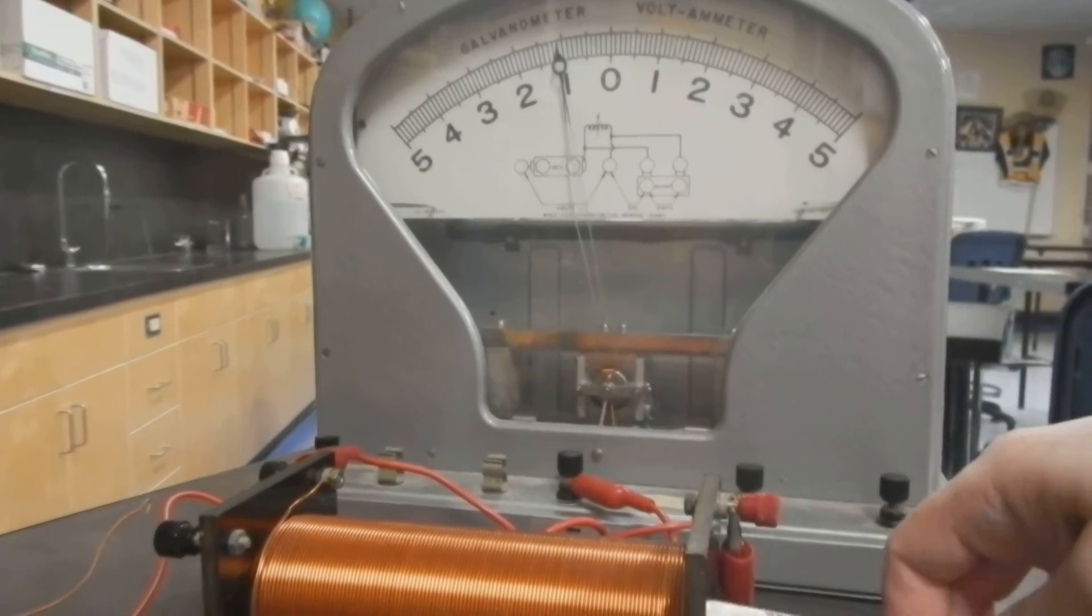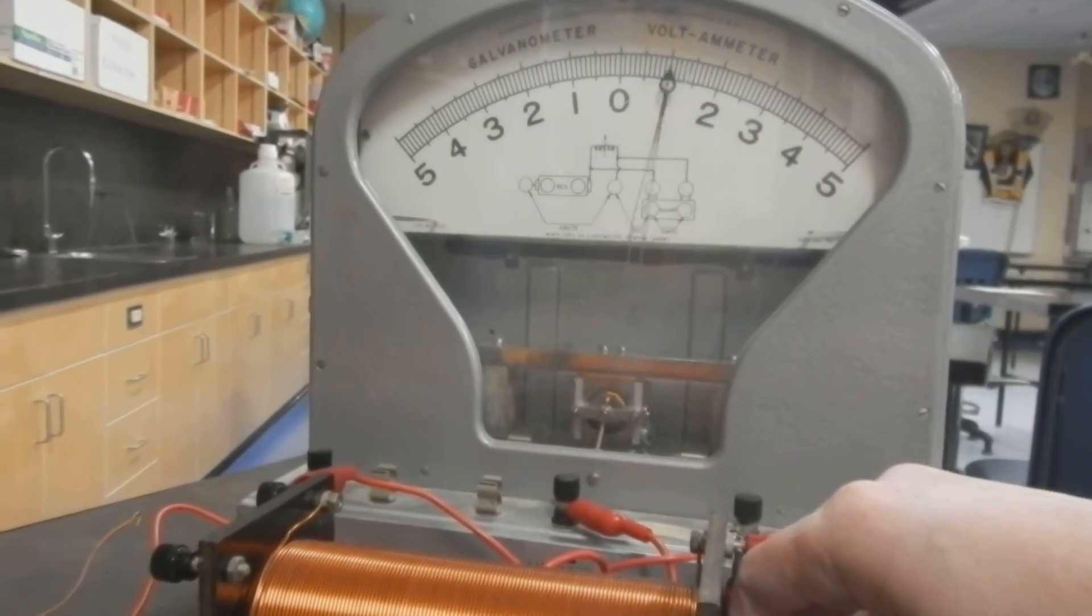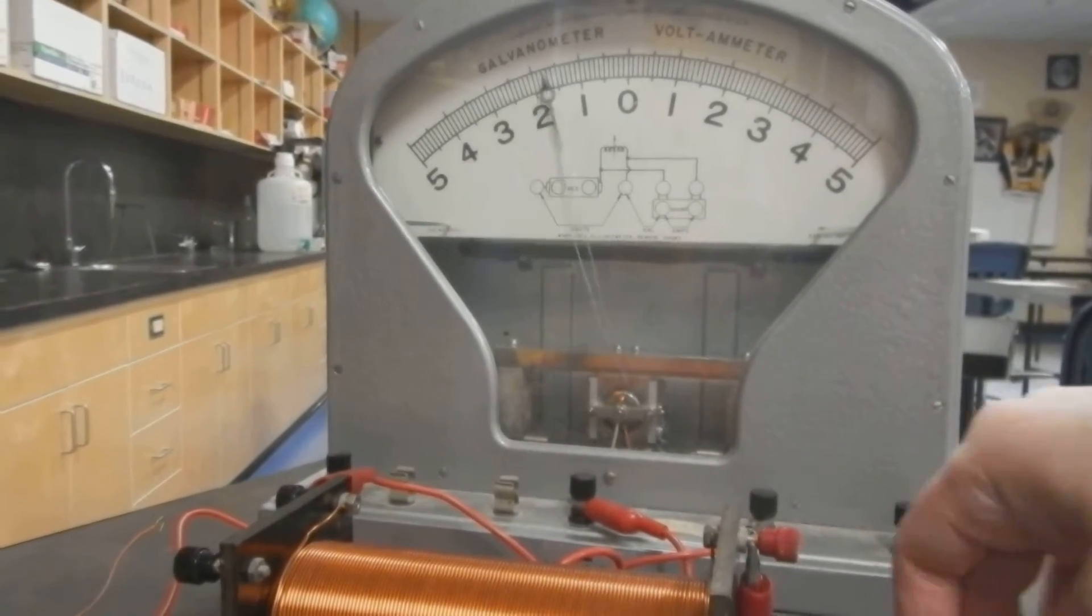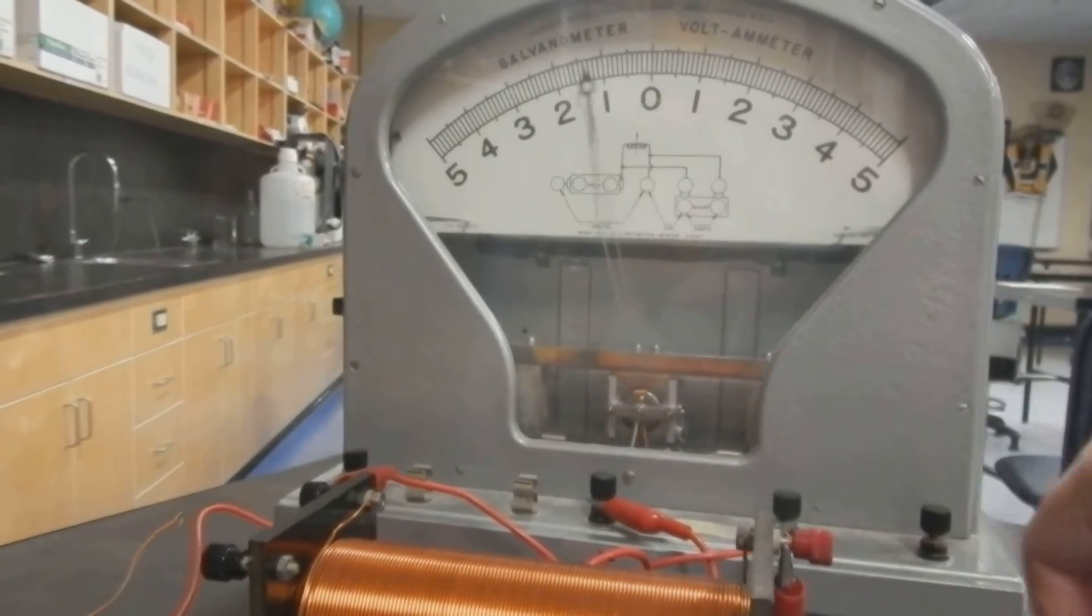If I do the silver, instead of going left, the needle goes right. When I pull it out, it goes to the left. So that's an example of alternating current.